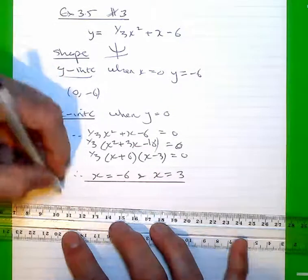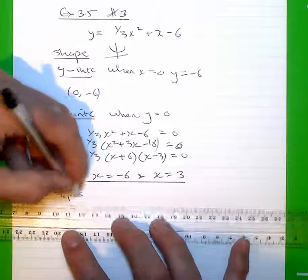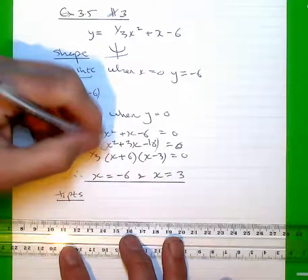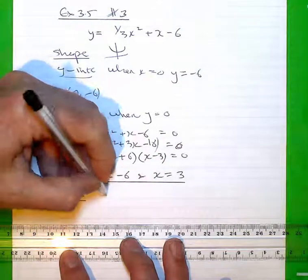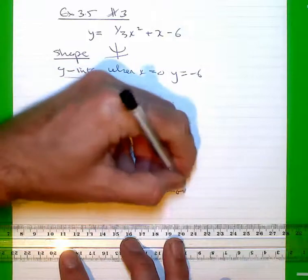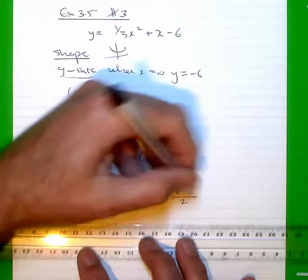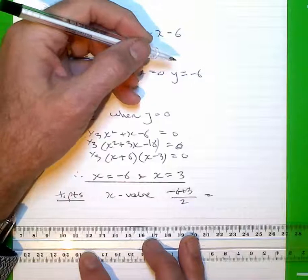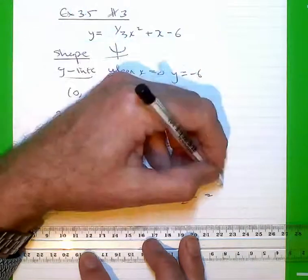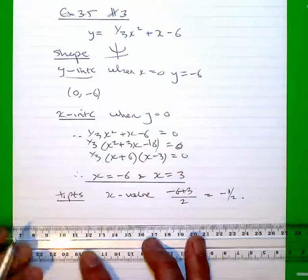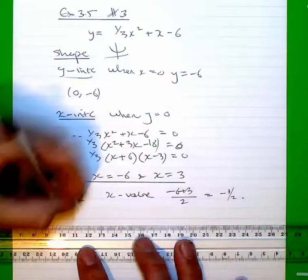Now, to locate the turning points, I'm going to do this by completing the square. You could also find it simply by the X value, negative six plus three over two, and you'll soon find that gives you negative three over two as your X value. And you can substitute that in.